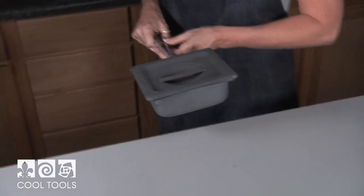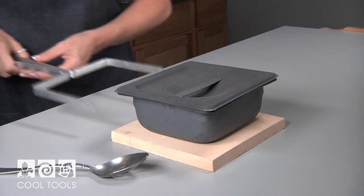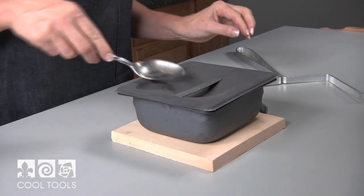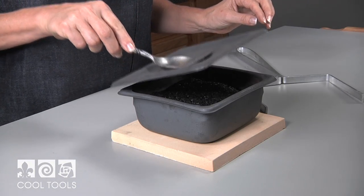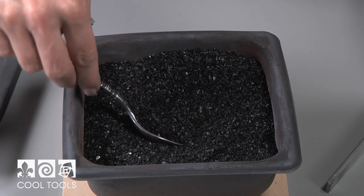After firing, let the kiln cool naturally and remove the piece from the carbon. This is the exciting part. Carefully remove the pendant from the carbon using a slotted spoon or tongs, as the carbon or the pendant may still be hot.